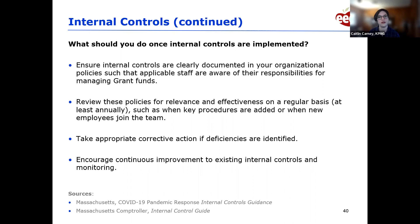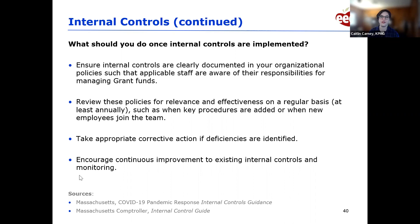If deficiencies are identified, the most important thing is to identify them and take corrective action. Encourage continuous improvement of existing internal controls and monitoring — it's not a one-and-done thing. Your child care provider is a living, breathing organization where things change all the time, so you need to keep revisiting internal controls and finding ways to improve them. Internal controls are not at odds with your goals — they are there to help achieve them.